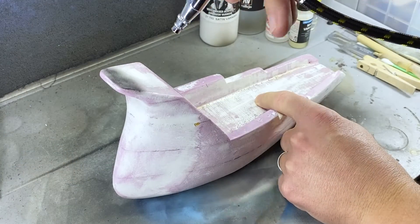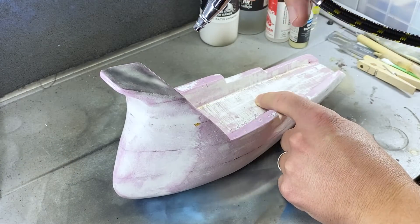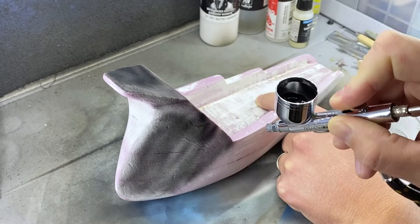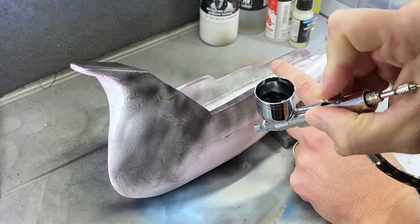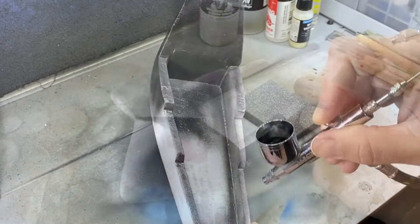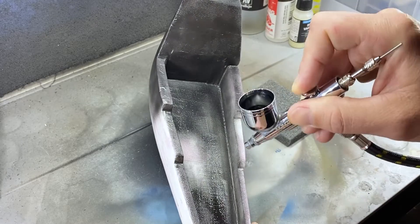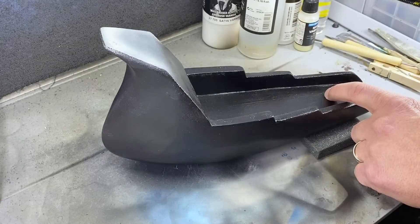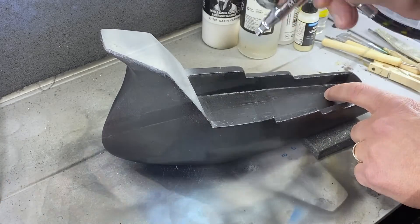I wanted to prime it with Vallejo's black primer first, just to make sure I could see where everything was and make sure everything was covered. And then I go back over it with a light gray so it would match the rest of the pieces. I really wanted it to all blend together.